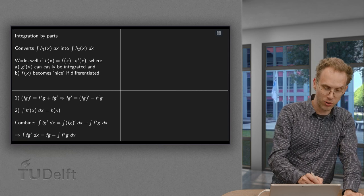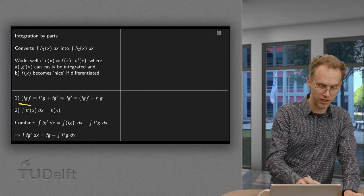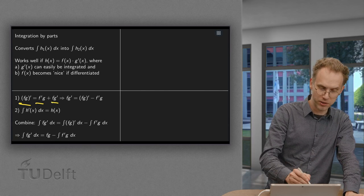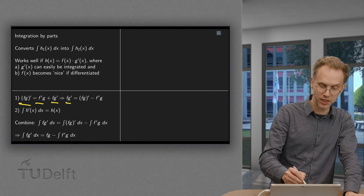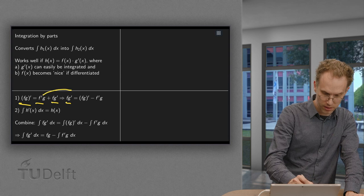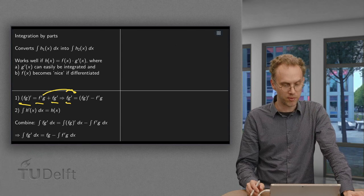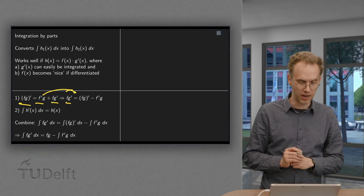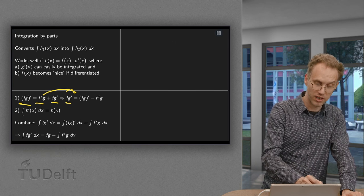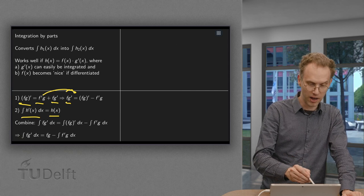We write down the product rule of differentiation first: (f times g) prime equals f prime times g plus f times g prime. So we can solve for f times g prime. Bringing this term to the other side, f times g prime equals (f times g) prime minus f prime times g. We also use the fact that the antiderivative of a derivative equals the original function.